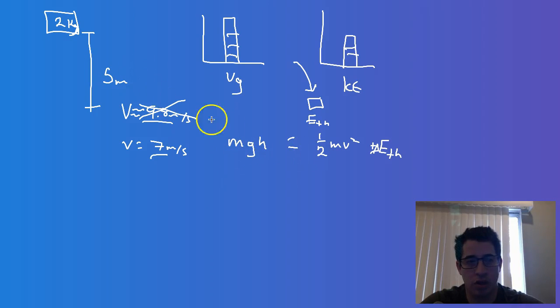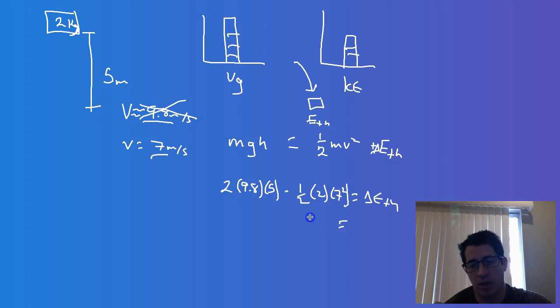And so we plug those values in and we find out that about 49 joules of energy were lost to the environment.